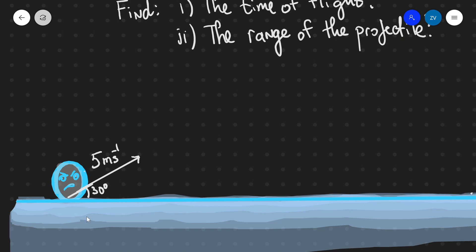The first thing to do is visualize the trajectory. After the projectile is shot off at five meters per second directed at 30 degrees to the horizontal, it will increase its height until it reaches a maximum height. Then it will decrease in height and land at a certain distance that we're going to find out.